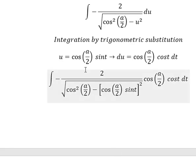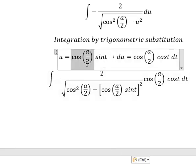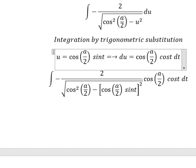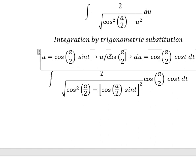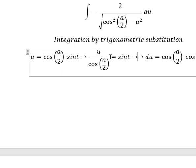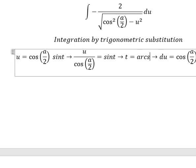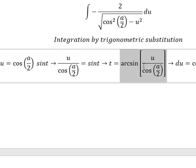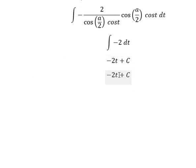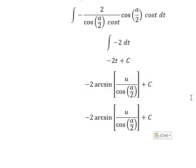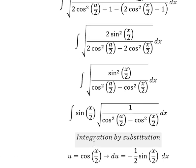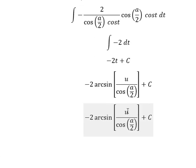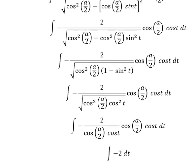About t — that is from this expression. So we divide both sides by cosine(a/2), and now we have t equal to arcsin of this one. And now I will substitute this back to replace t. About u, that is cosine of x over 2. This is the end. Thank you for watching. Here is the full answer of the question.